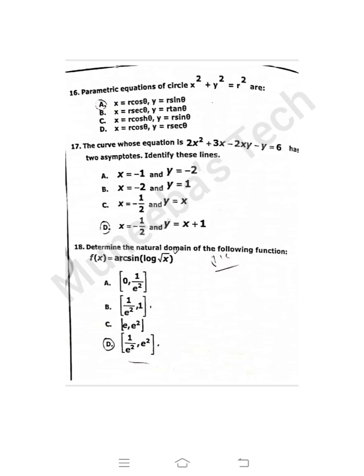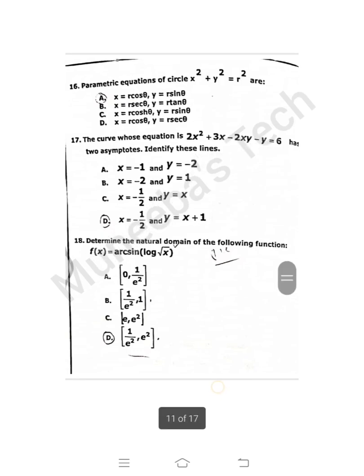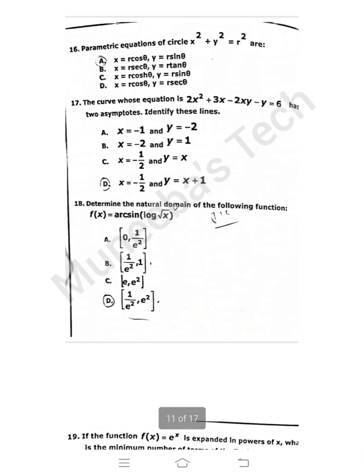Question 17: The curve whose equation is 2x² + 3x - 2xy - y = 6 has two asymptotes. Identify these lines. I already shared the formula for asymptotes and you can find these lines. Option D is the correct one. Question 18: Determine the natural domain of the following function. Option D is correct. I have no idea about the solution, I just know the answer.